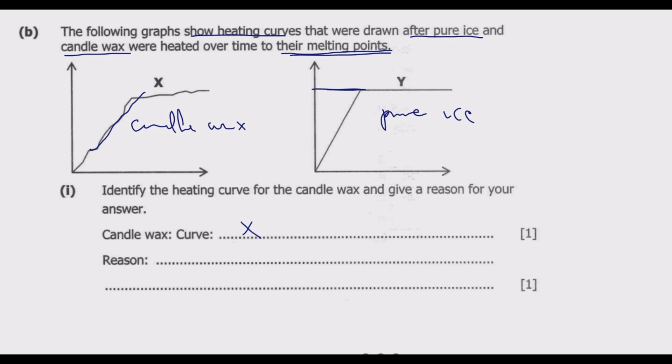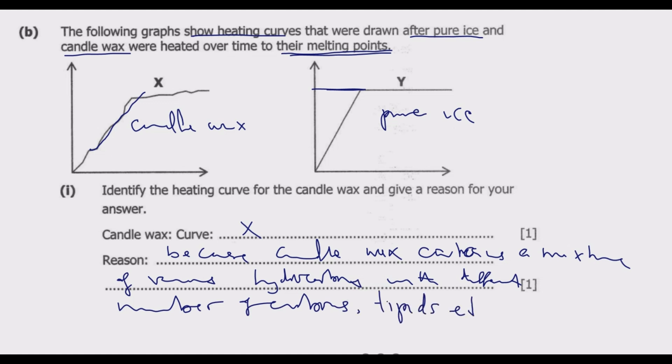The reasoning is that because candle wax contains a mixture of various hydrocarbons with different numbers of carbons, it has an irregular melting point as shown by curve X.